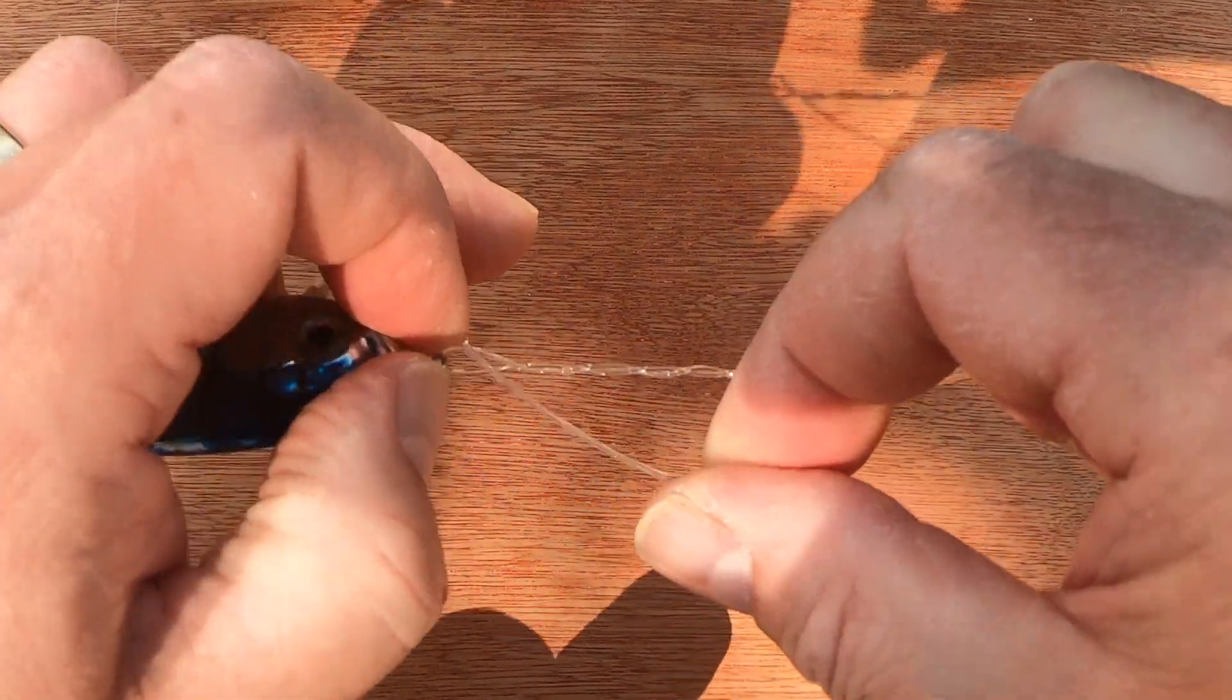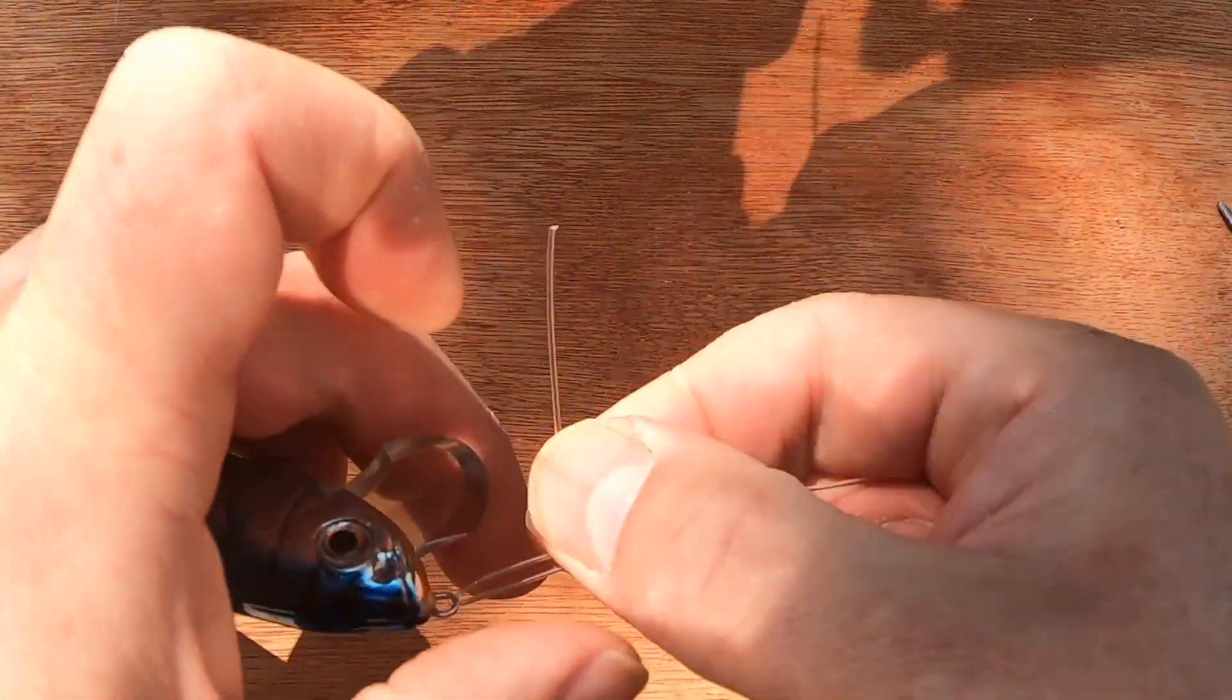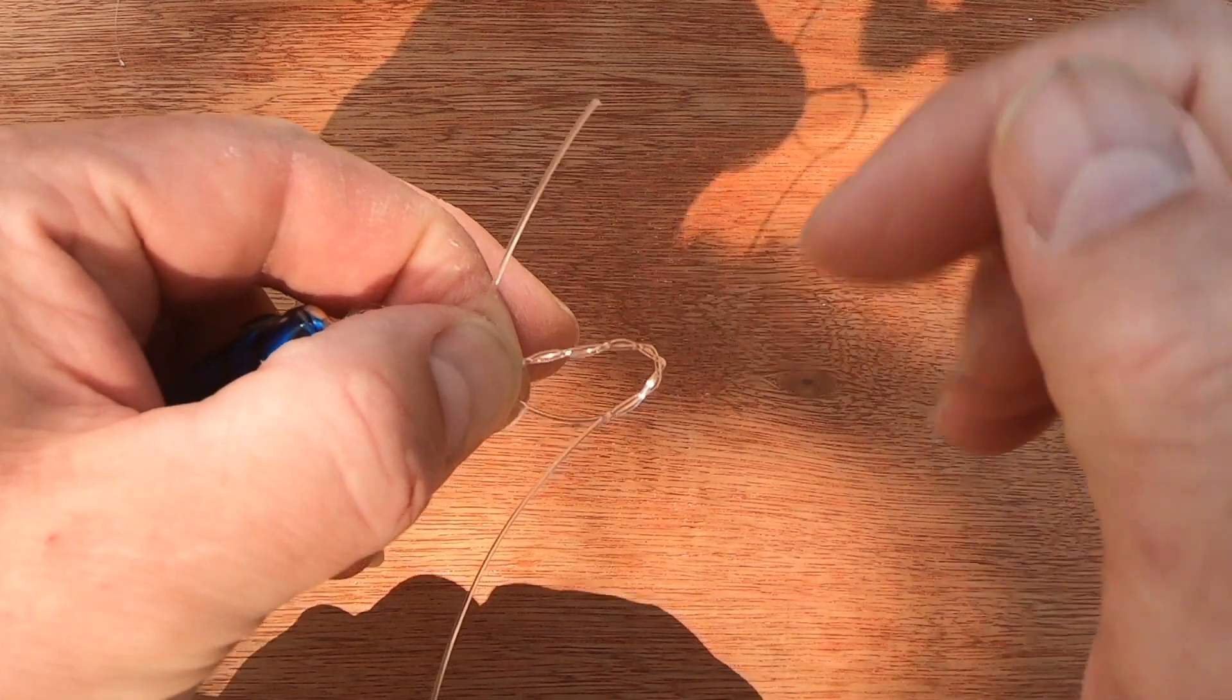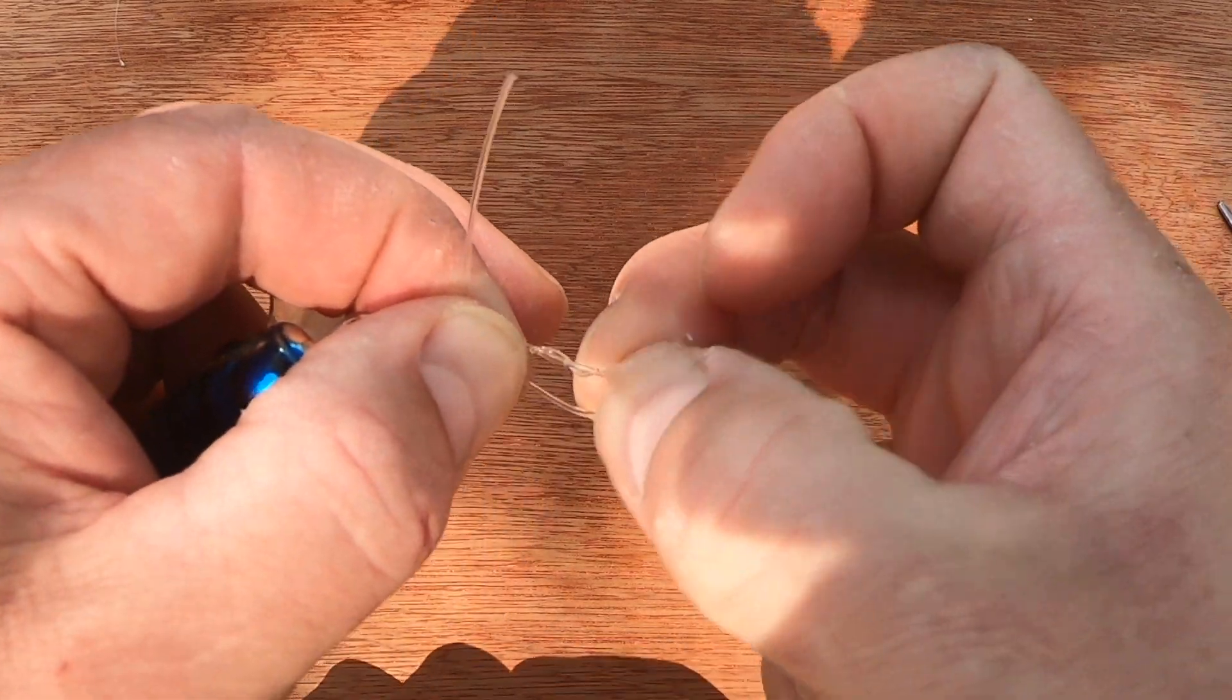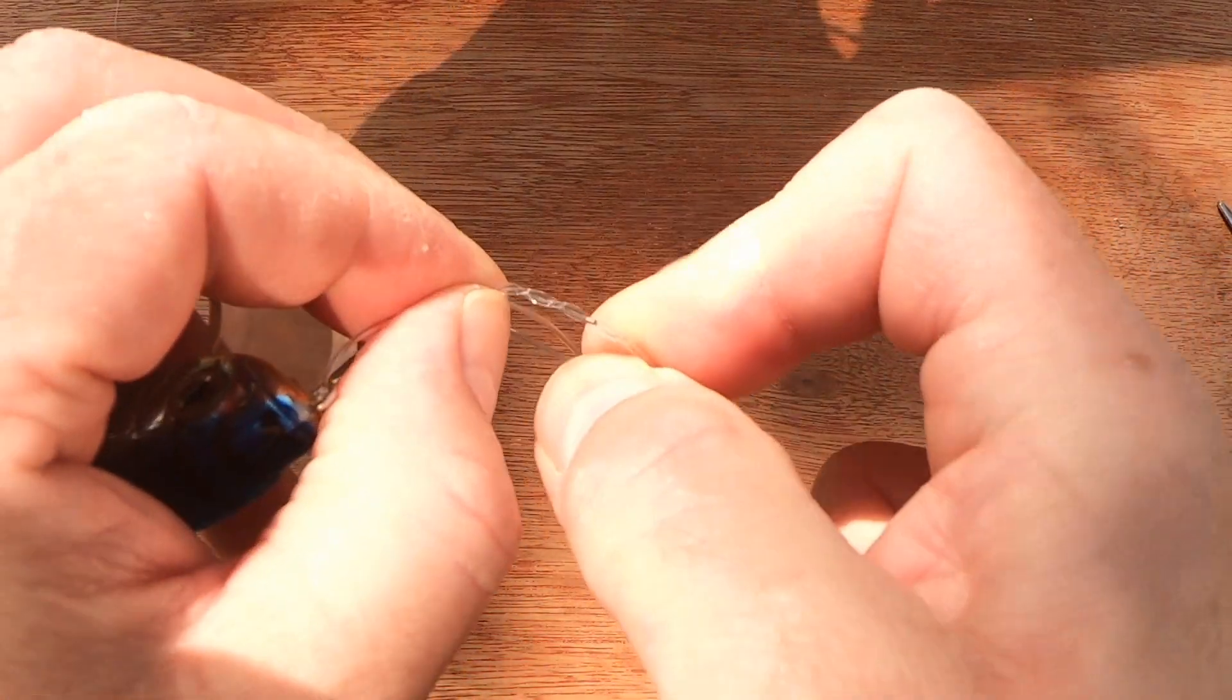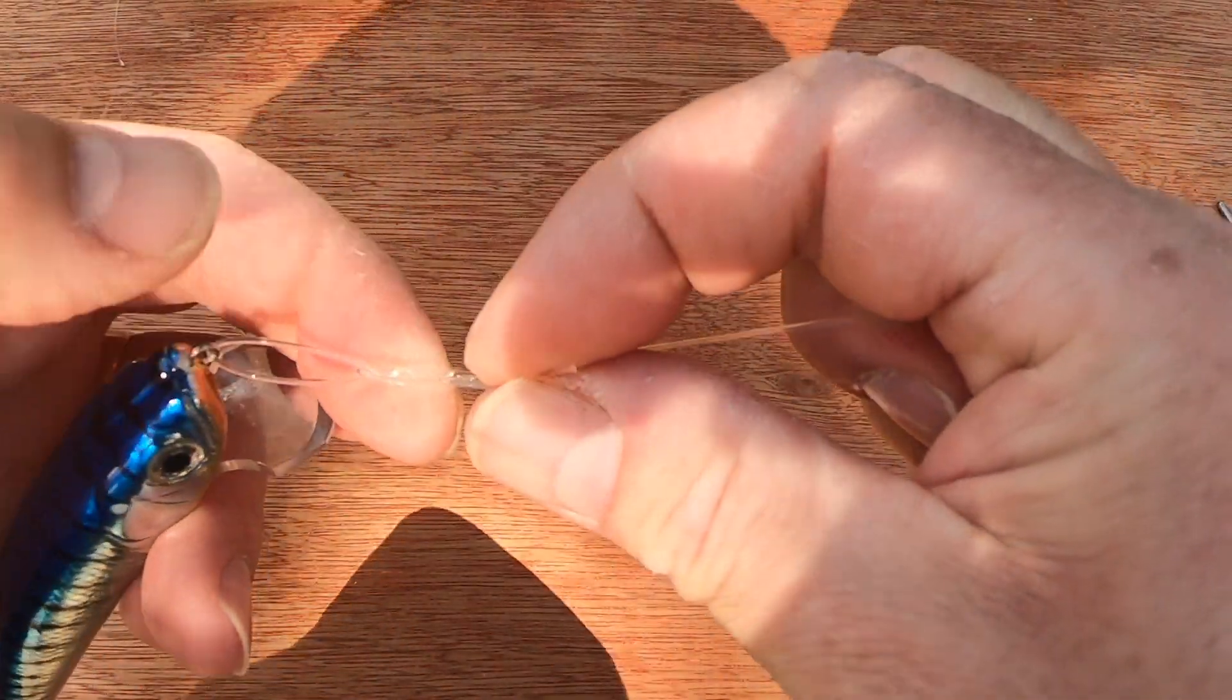Wrap it around the main line about six times, pull it back, and so you've got this loop that you've created. Pass that tag end back through that loop. But at this point you have a choice. This is what we call a half, well a blood knot. You can do a tucked blood knot, and that would involve tucking it back through the loop that you've created between your twists and the line to the lure at this point.